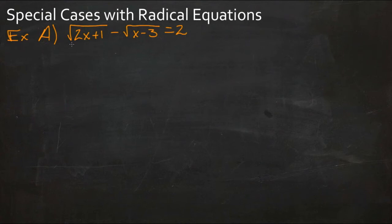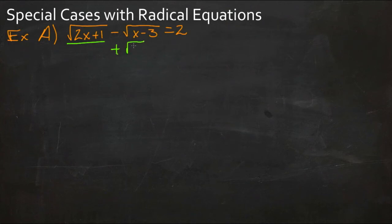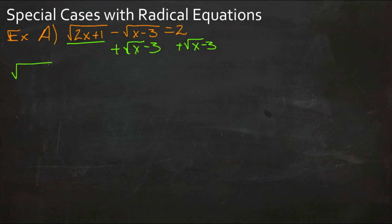The first thing we need to do is isolate one of the radicals on one side of the equal sign so that we can square it and get rid of that radical. To do that, we're going to move this minus square root of x minus 3 to the other side by adding it to both sides. That gives us our starting point: square root of 2x plus 1 equals 2 plus the square root of x minus 3.